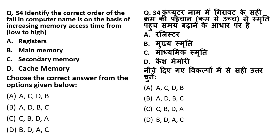Identify the correct order of computer memory components by increasing access time from low to high. Registers are the fastest and require the least access time, then cache memory, then main memory (RAM), and then secondary memory like pen drives, CDs, and DVDs. So the order according to access time is ADBC.